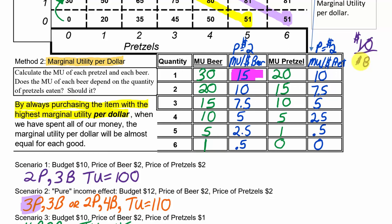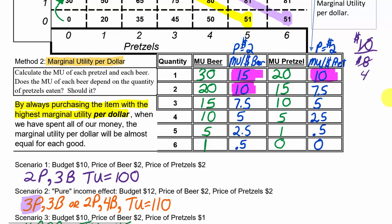We highlight that we've bought the first beer. It costs us $2 and we have $8 left. Now what should we buy next? We could buy the second beer for 10 happiness per dollar, or the first pretzel for 10 happiness per dollar - they're equal. Since we can afford both and they're $2 each and we have $8 left, let's buy both. So we buy the second beer and the first pretzel, costing us $4. Now we have $4 left.